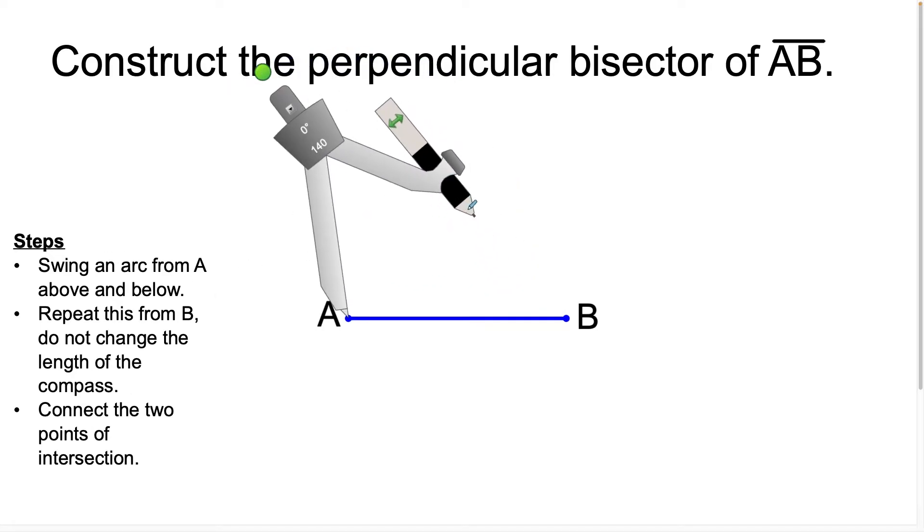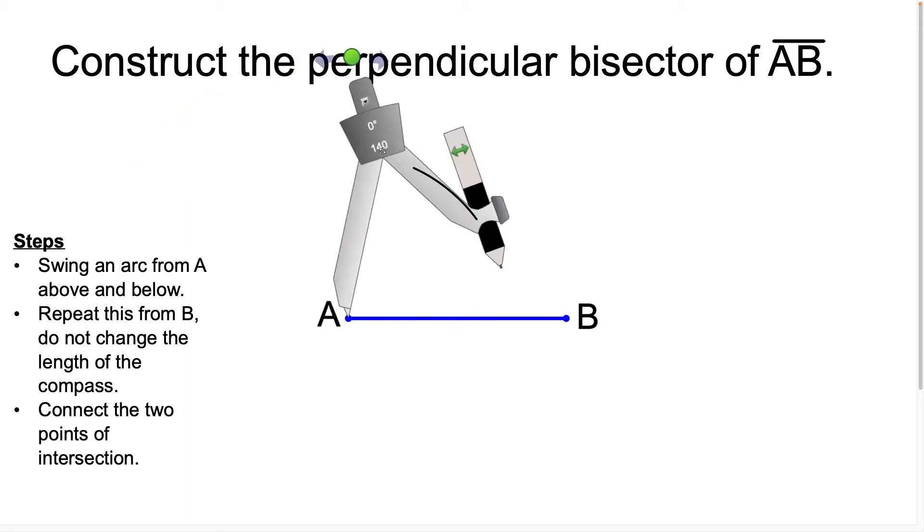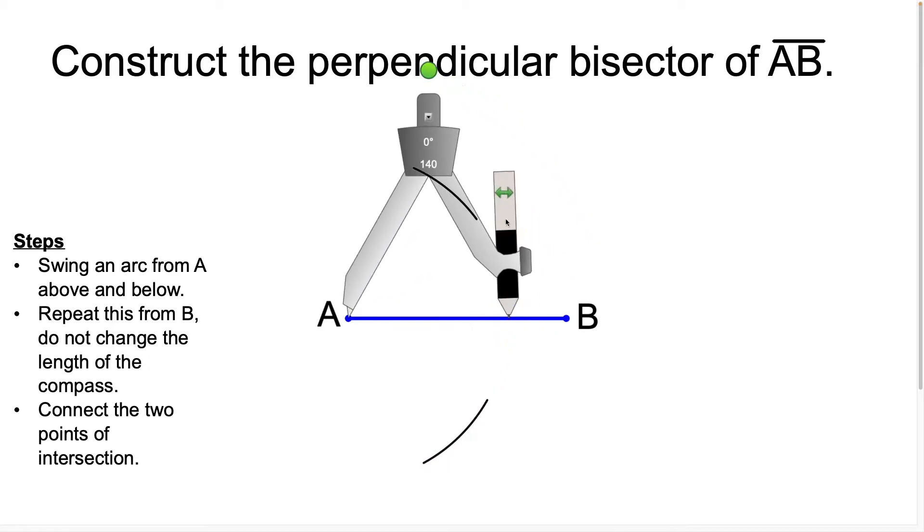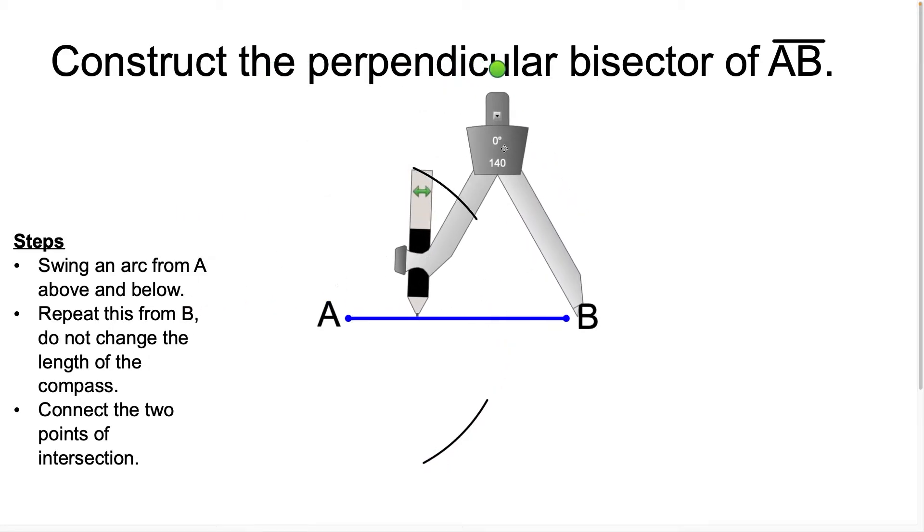We're going to swing an arc from A above and we're going to swing the arc below like this. Now we're going to move the compass over to point B, but it's very important that you don't change the length of the compass, otherwise it's going to mess the construction up.